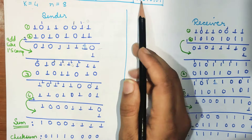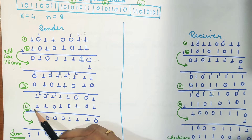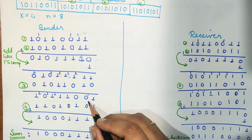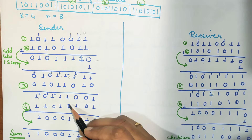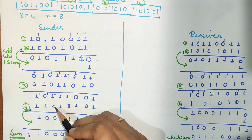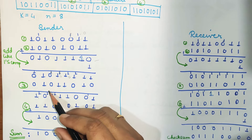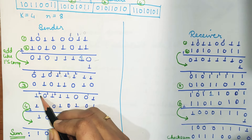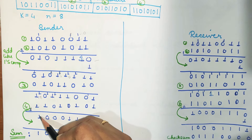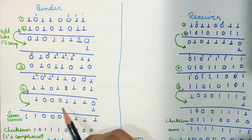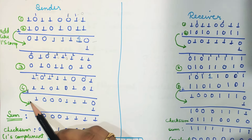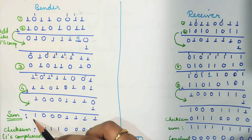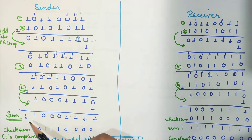Now the last remaining block is the fourth block, which we are going to add. We write this block and add: 1+1 is 0 carry 1, and continuing through the bits — 0+1 is 1, 1+1 is 0 carry 1, 1+1 is 0 carry 1, and again 1+1 is 0 carry 1, then 1+1 is 0 and 0+1 is 1. As you can see, there is still a carry 1 remaining, so we take it below and add it again using ones complement. After adding the carry, we get the final sum of all the blocks.